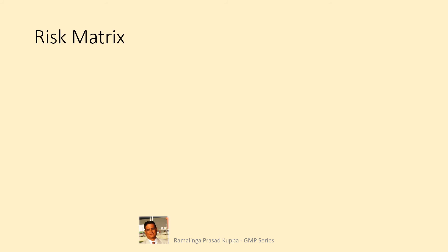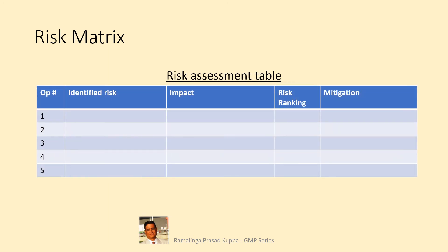Let us see a typical risk matrix. This format is useful for capturing all the operations point-wise and, based on the impact analysis, risk ranking can be done. If the FMECA tool is used, you may have another column for S × P × D for establishing the risk classification with score. If the risk assessment confirms that there is no risk, very low risk, or acceptable risk, a note of no mitigation plan assigned for this operational step may be written in the mitigation plan. Separate matrices may be done for each stage of operation.